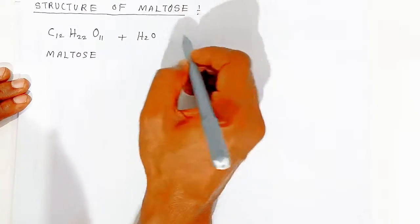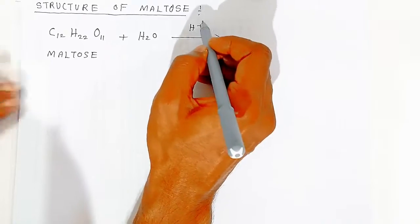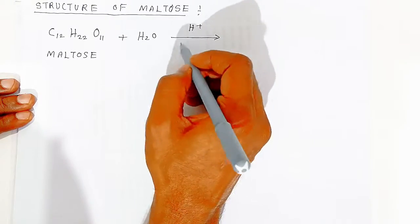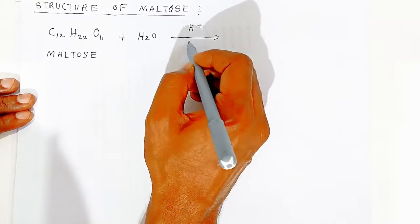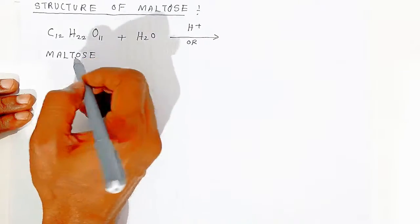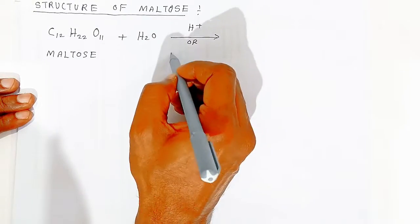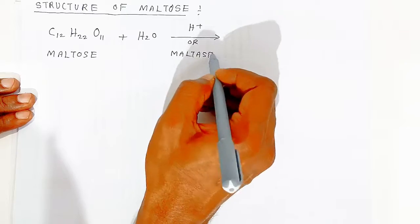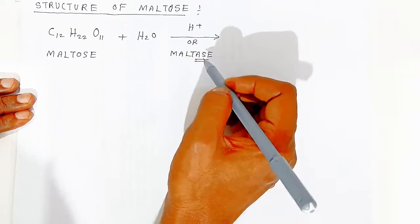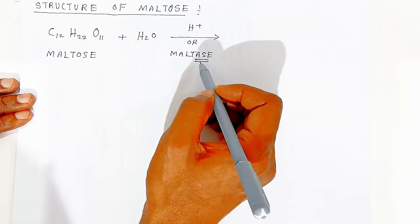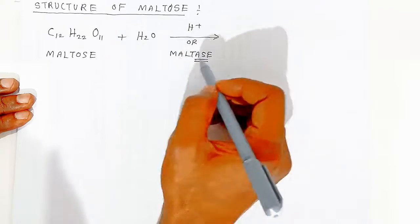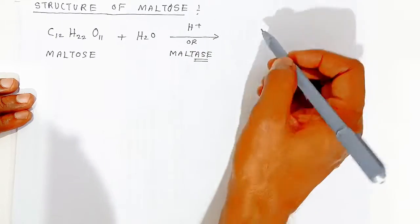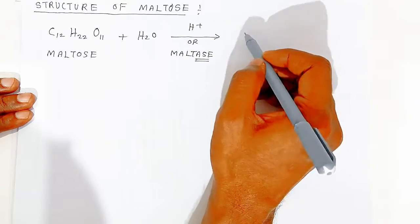On acid hydrolysis of maltose, or using the enzyme maltase, the disaccharide is broken down into monosaccharides. The enzyme maltase specifically breaks down maltose.